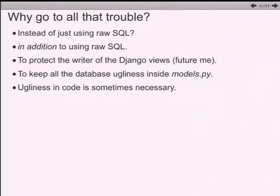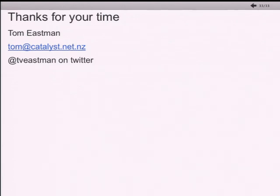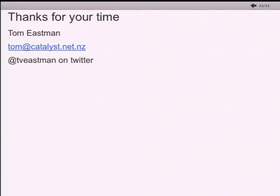So why go to all this trouble? Because you want to keep the weird database stuff abstracted out. If I kept all this evil horrible stuff in my models.py, then the person writing the views doesn't have to think about how horrible the database actually is. Ugliness in code is sometimes necessary - try to avoid it when you can, and if you can't avoid it, keep it contained. If you do that, your abstraction layer is protecting you from yourself.